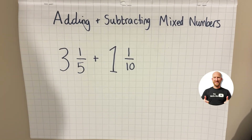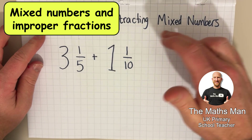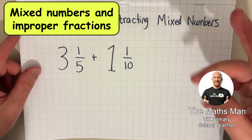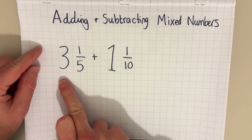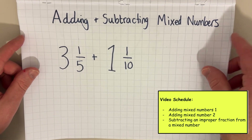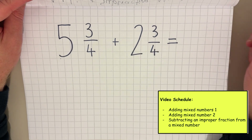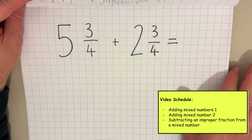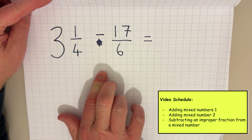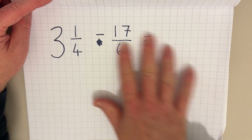Hi everyone and welcome to the Massman YouTube channel. In this video today we are going to be looking at adding and subtracting mixed numbers and improper fractions. We're going to look at three example questions in total. The first one is adding two mixed numbers together, the second is again adding two mixed numbers but slightly harder, and the video will finish with subtracting an improper fraction from a mixed number.